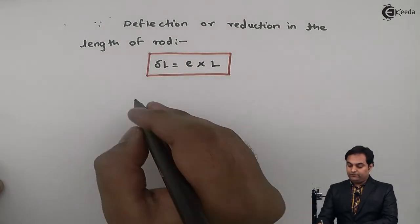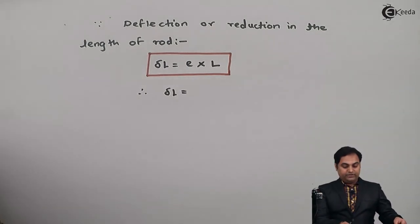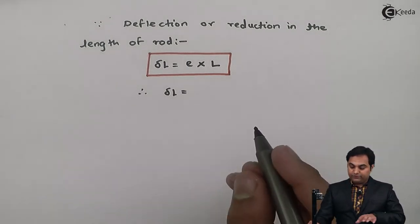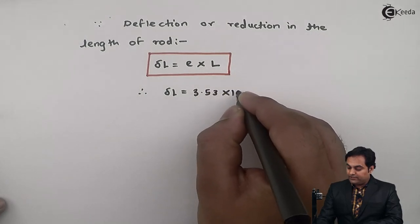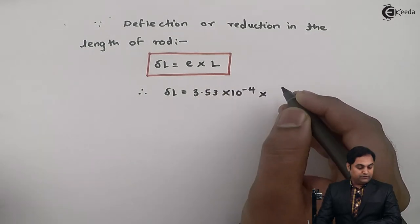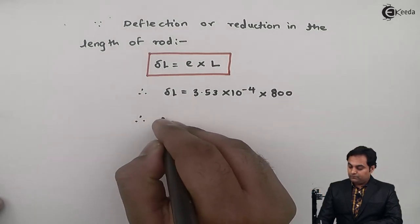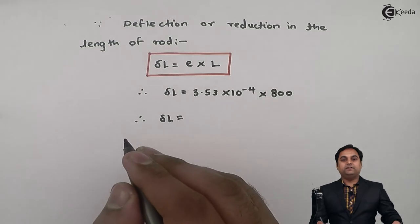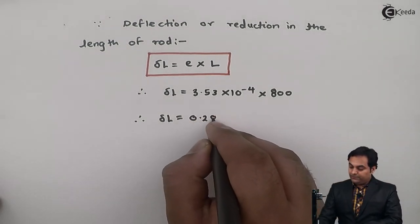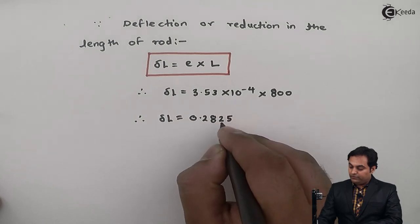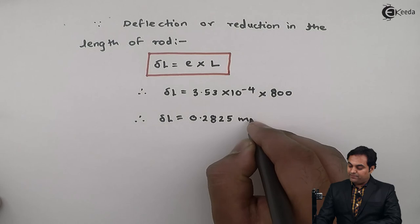Therefore deflection = strain × original length = 3.53 × 10⁻⁴ multiplied by 800 mm. From this, the answer of deflection comes out to be 0.2825 mm.